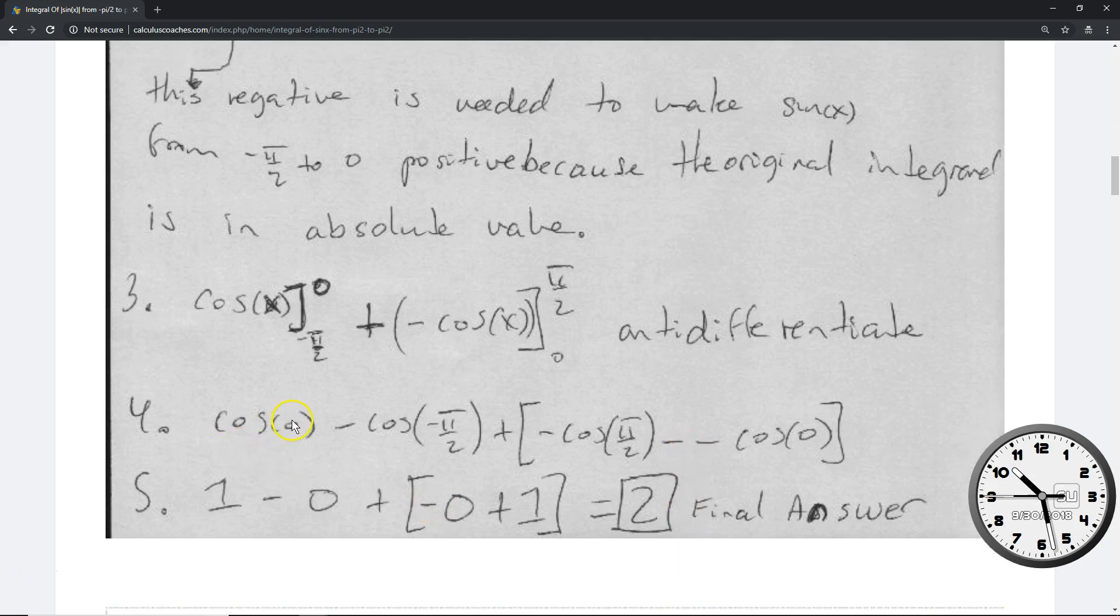After that, you have the following. Cosine of 0 is 1. Cosine of negative pi over 2 is 0, so you end up with 1 minus 0. Within the brackets, you have negative cosine of pi over 2. Cosine of pi over 2 is 0, so negative of 0 gives you negative 0. Here you have cosine of 0, which is carefully 1.